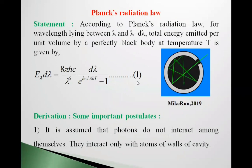So friends, first of all, we will see the statement of this law. According to this law statement, for wavelength lying between lambda and lambda plus d lambda, total energy emitted per unit volume by a perfectly black body at temperature T is given by this equation first, which is E lambda d lambda equals 8 pi hc upon lambda raised to five into d lambda upon e raised to hc upon lambda kt minus 1.